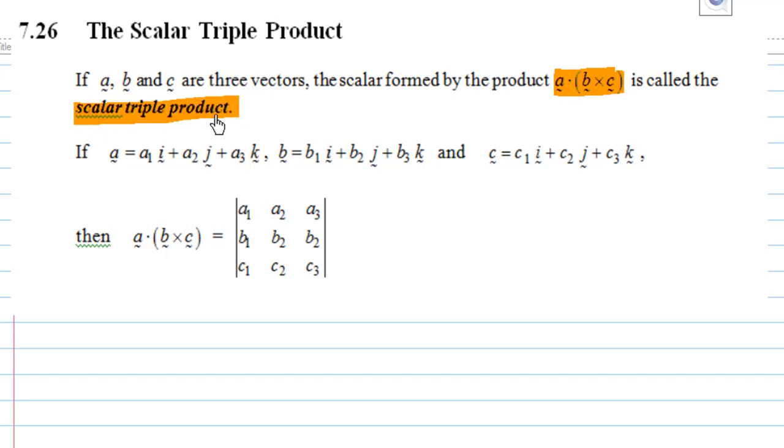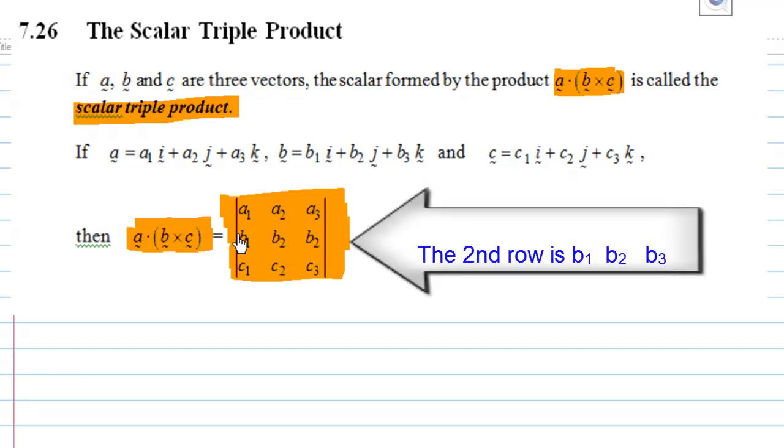If we express the vector in terms of i, j, and k, let's say a is equal to a1i plus a2j plus a3k, and b equal to b1i plus b2j plus b3k, if c is equal to c1i plus c2j plus c3k, then a dot b cross c will be the 3 by 3 determinant: a1, a2, a3, b1, b2, b3, c1, c2, c3. And this will be a number.